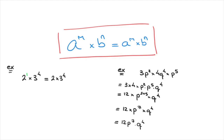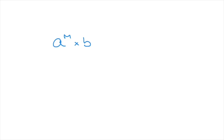I'll finish by highlighting one special case of this product. If we have a to the power of m times b to the power of m — powers of different bases a and b, but each raised to the same power — then this equals, in parentheses, a times b raised to the power of m. I'll go ahead and box that result.